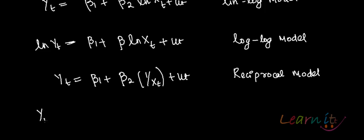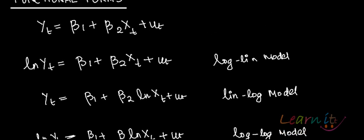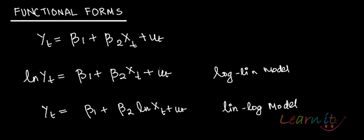If you have the model yt equals beta 1 plus beta 2 xt plus beta 3 xt square and so on, these are called polynomial models. We'll look into the various cases in this chapter where exactly all of these models be used. In our next recording, we're going to talk about how do you find out elasticities in all of these models.